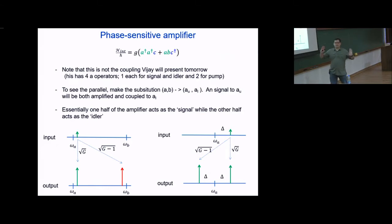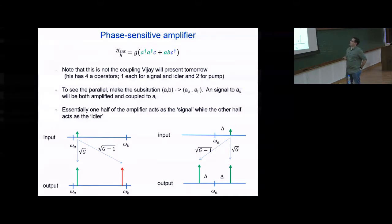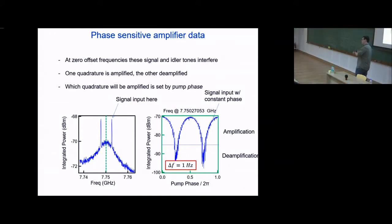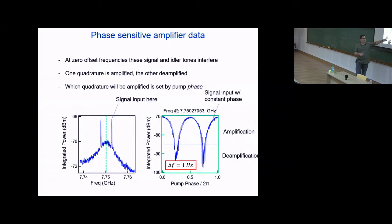Phase-sensitive amplification: at zero offset frequency, signal and idler tones interfere. The phase of their combination is set by the phase of the parametric drive. One quadrature interferes constructively and is amplified; the other is de-amplified — for example, a signal into I is amplified, a signal into Q is de-amplified. Experimental evidence here shows both phase-preserving gain and phase-sensitive gain in the same device, demonstrated by measuring the output power as amplified noise versus frequency.